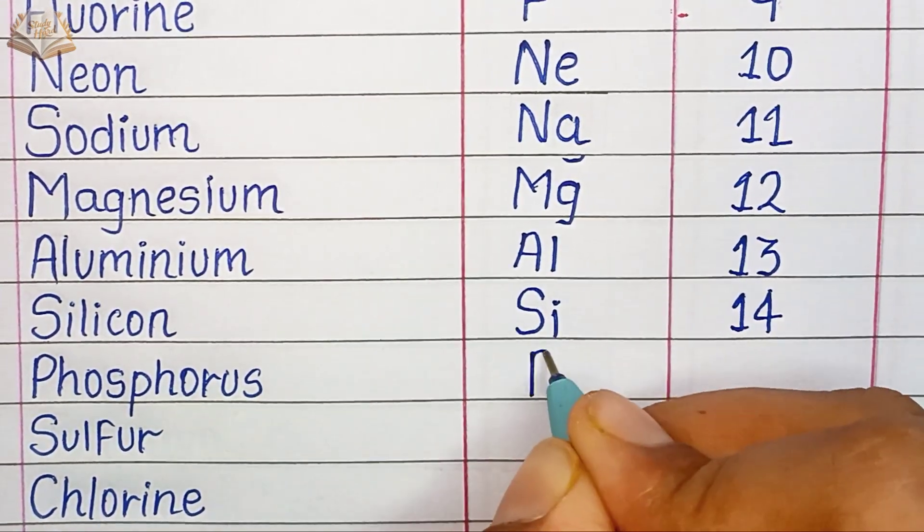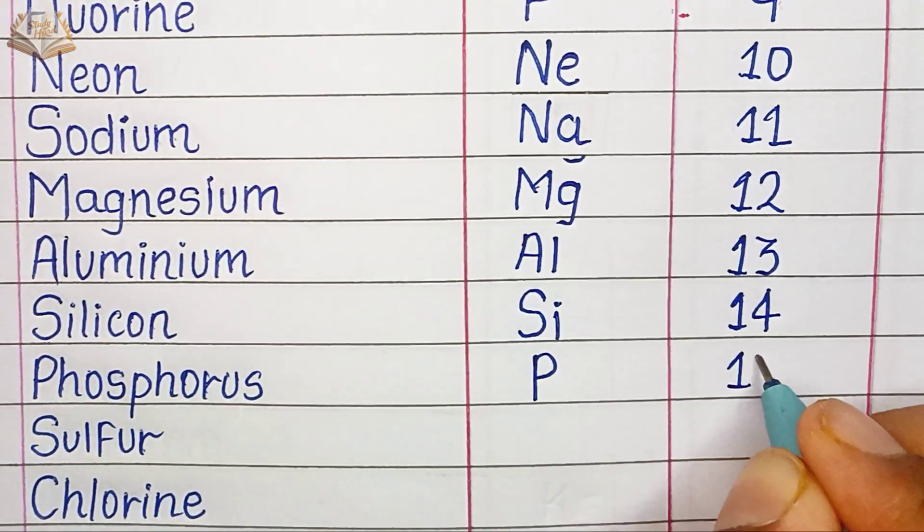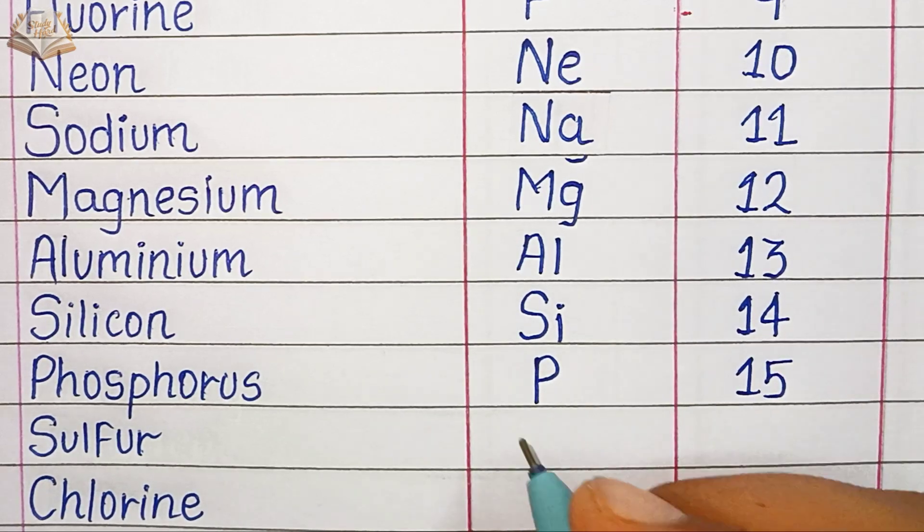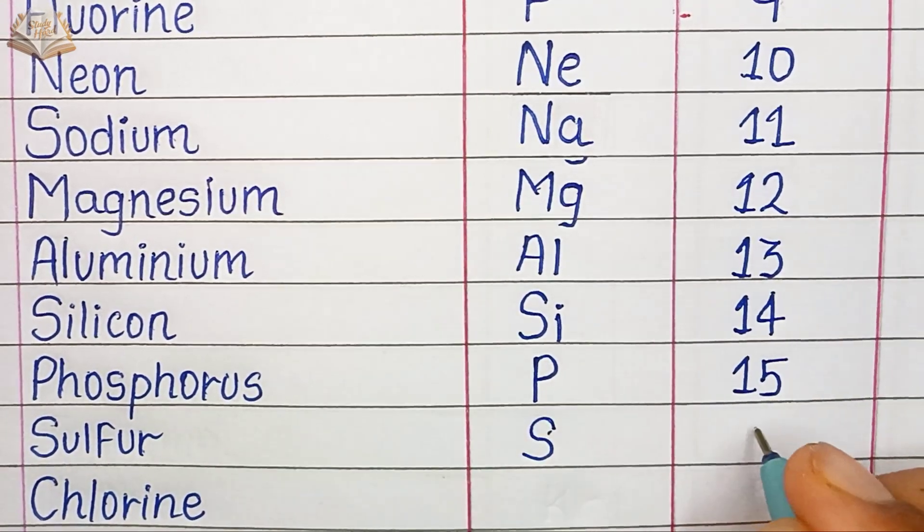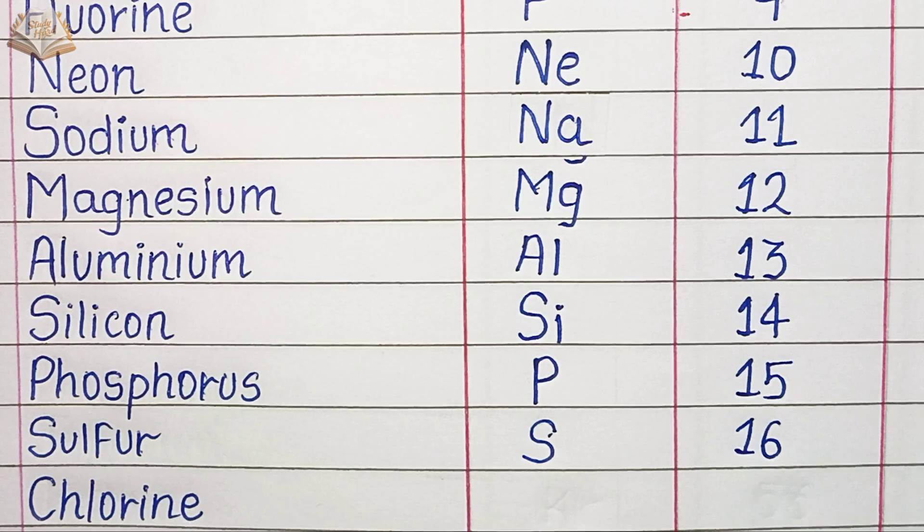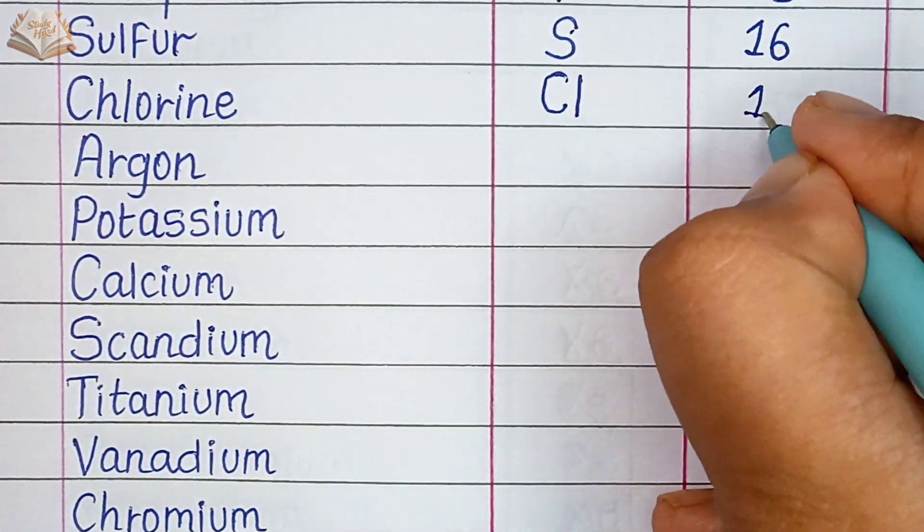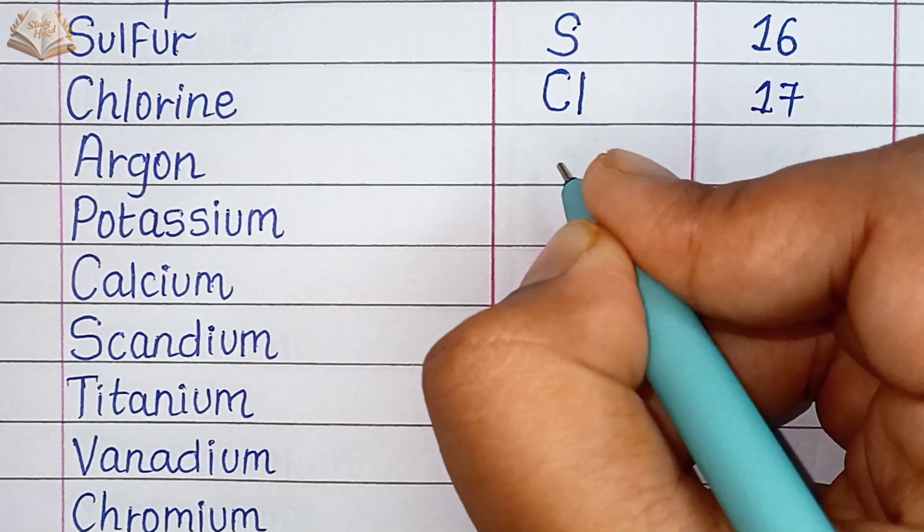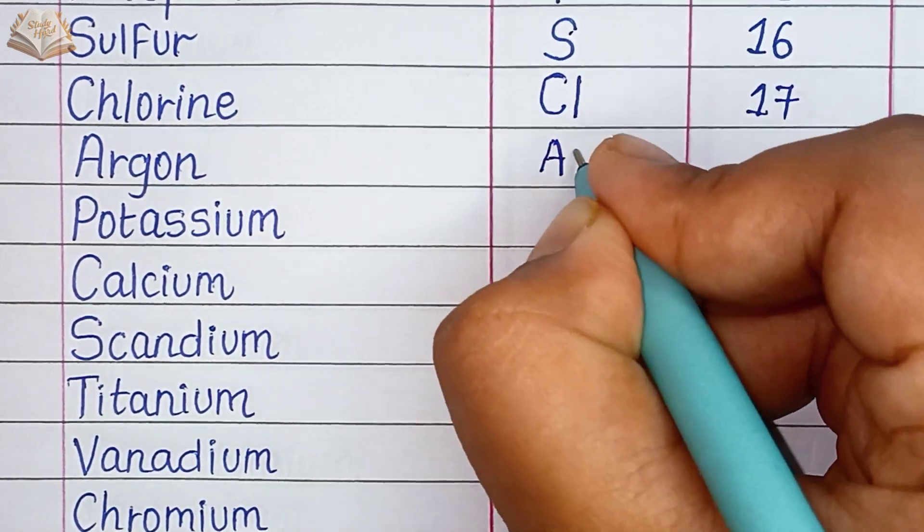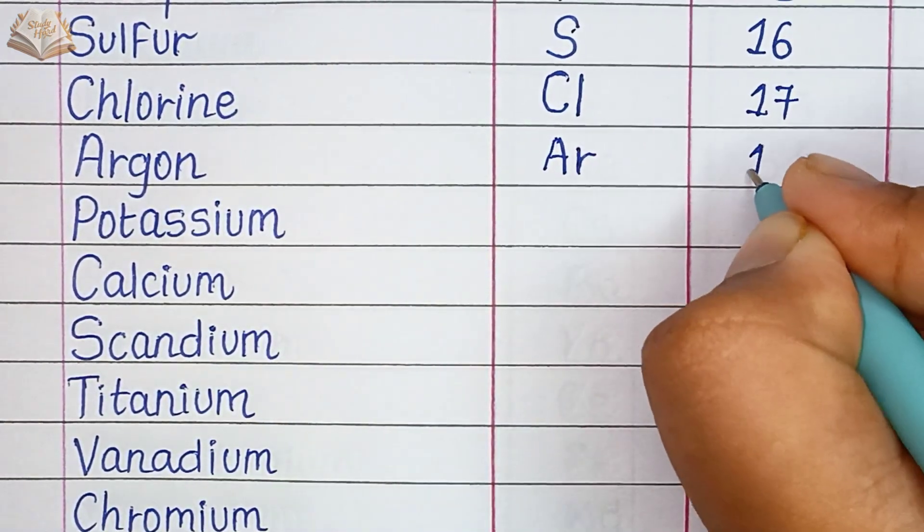Phosphorus, P, atomic number 15. Sulfur, S, atomic number 16. Chlorine, Cl, atomic number 17. Argon, Ar, atomic number 18.